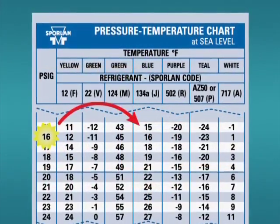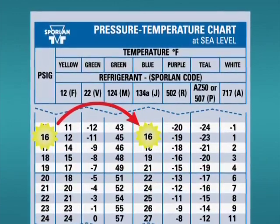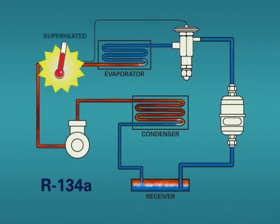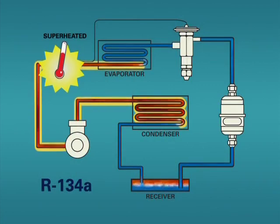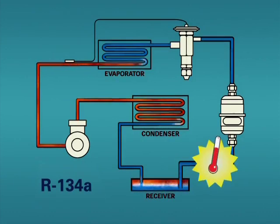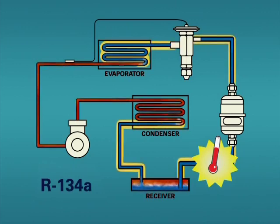This is true anywhere in the system, not just the evaporator, condenser and receiver. At points in the system where only vapor is present, the actual vapor temperature will be at or above the temperature indicated on the PT card. Vapor will only be present in the suction and discharge lines with a normally operating system. Where we have only liquid present, the actual liquid temperature will be at or below the temperature indicated on the PT card. Liquid refrigerant will be present in the liquid line which connects the condenser and evaporator coils.